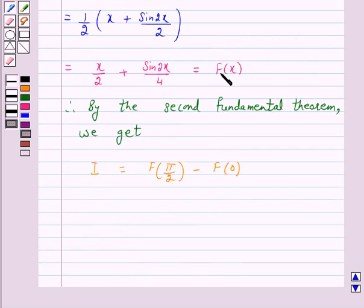Now, F(x) equals x/2 + sin2x/4. So F(π/2) equals π/4 + sin(2·π/2)/4.